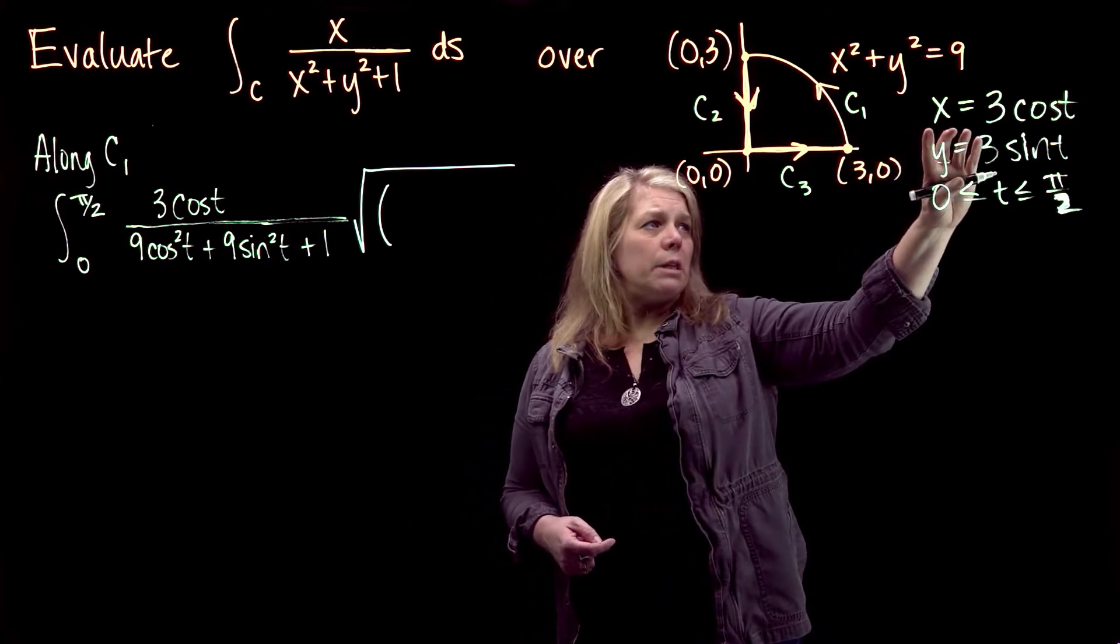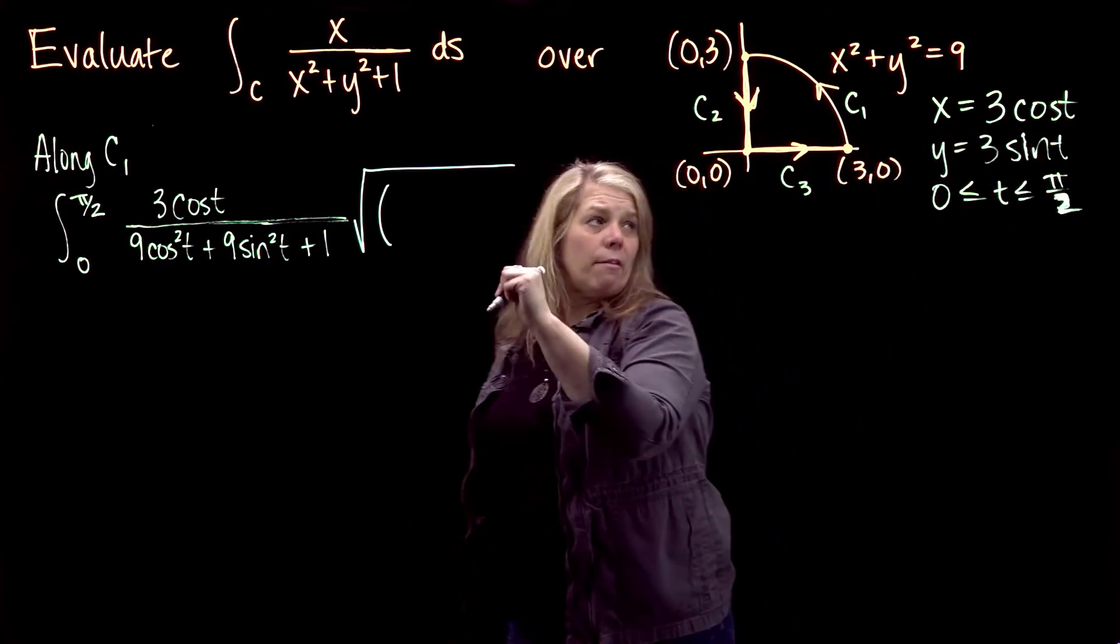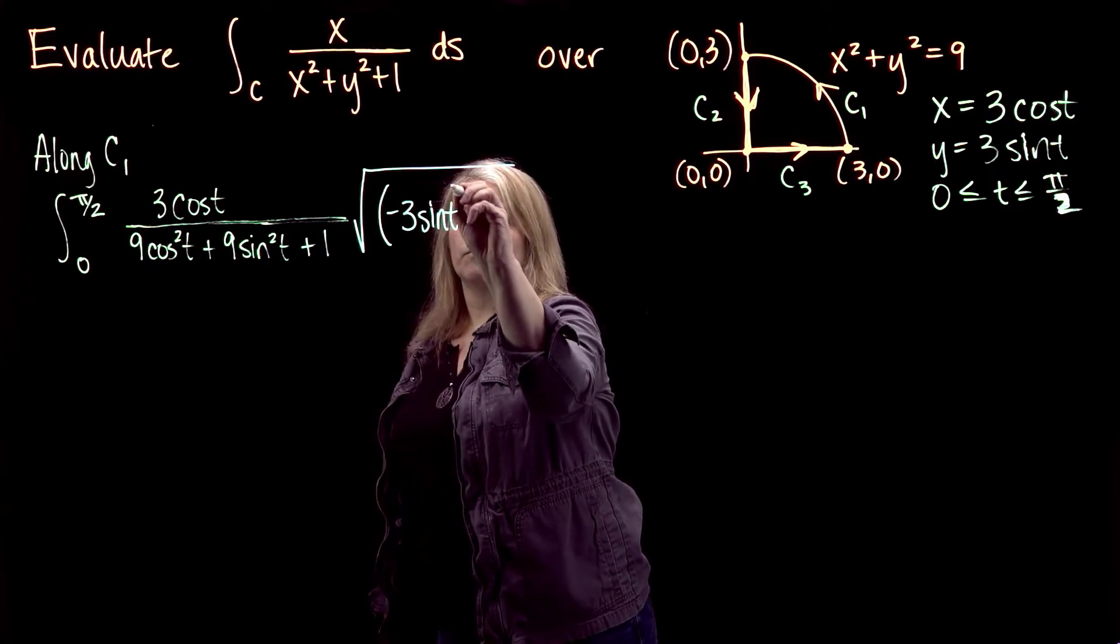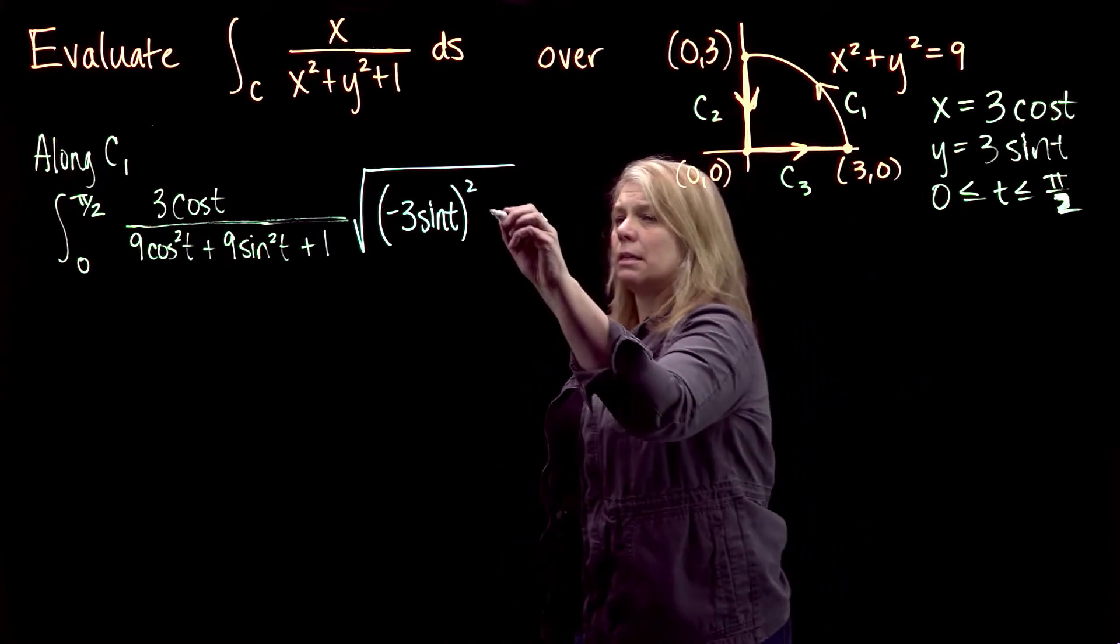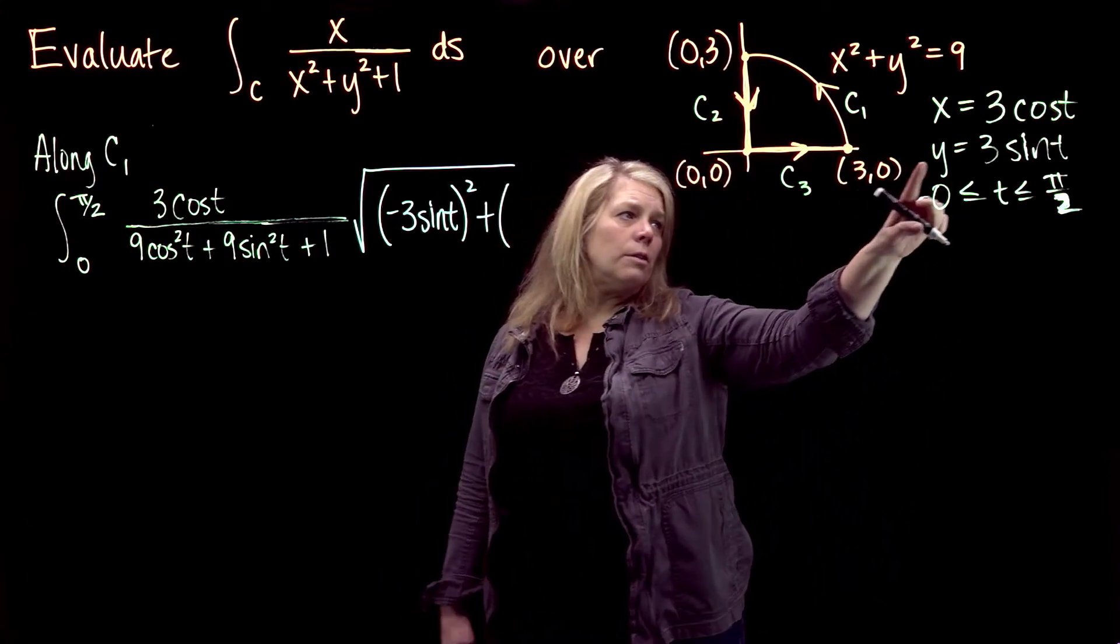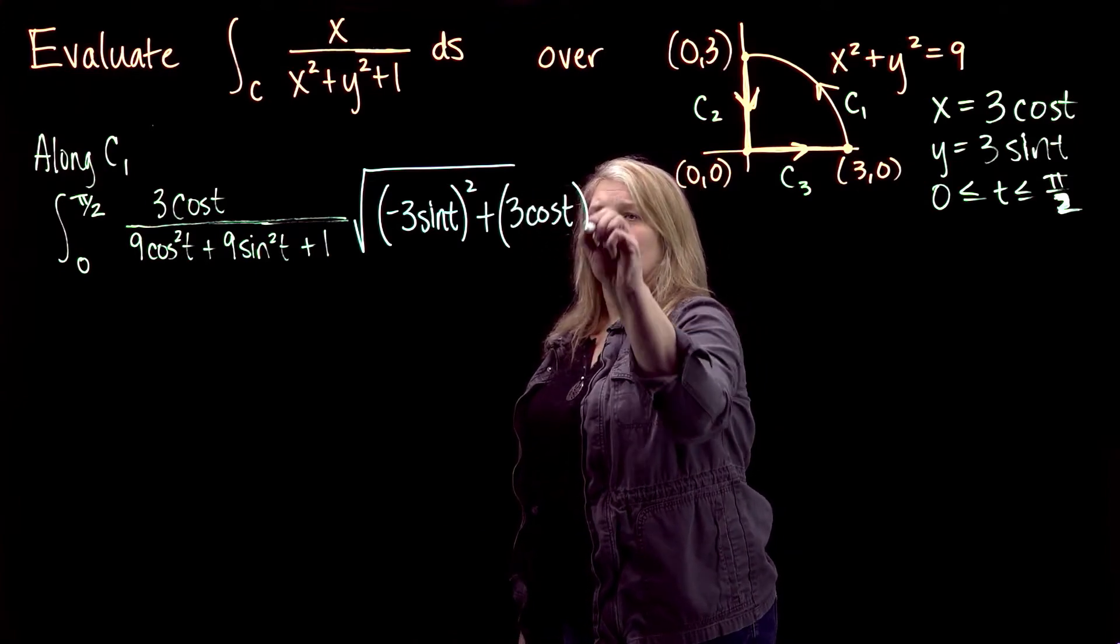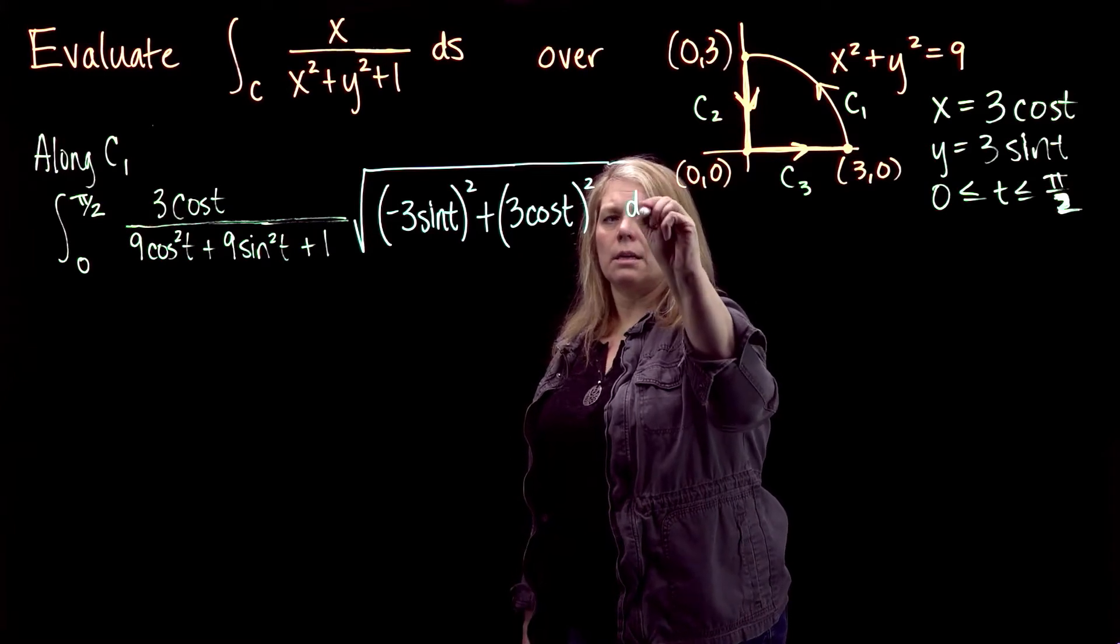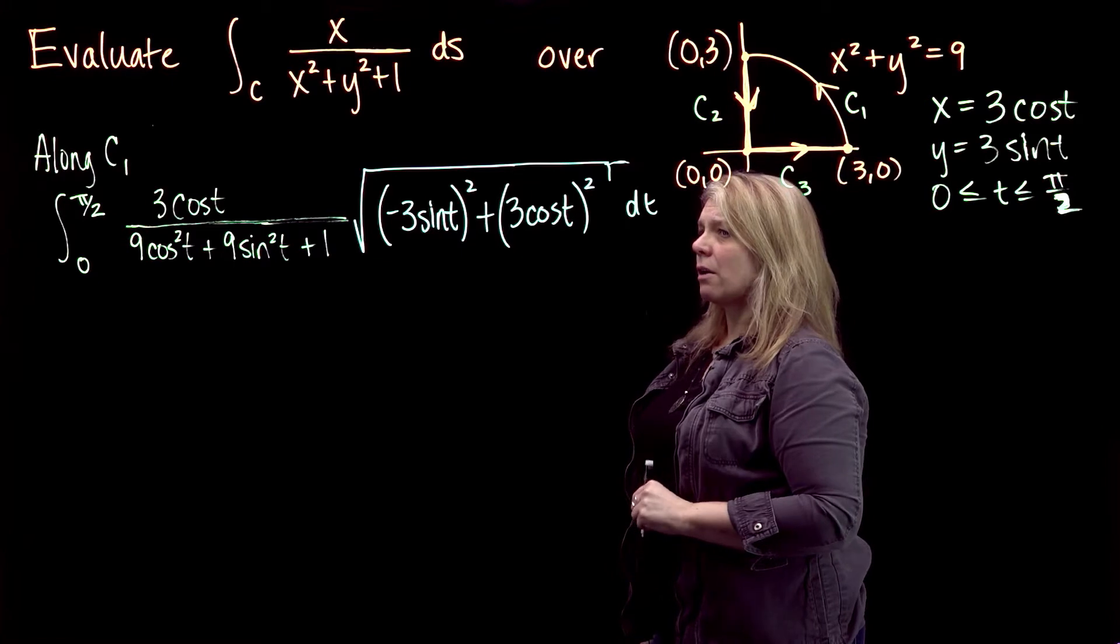My dx/dt will be the derivative of this x function with respect to t, so the derivative of that will be negative 3 sine t, the quantity squared, plus dy/dt. The derivative of this will be 3 cosine t, the quantity squared, and then dt. That's the radical right there, so my dt is not inside the radical.